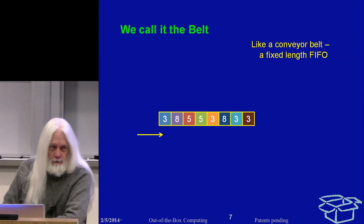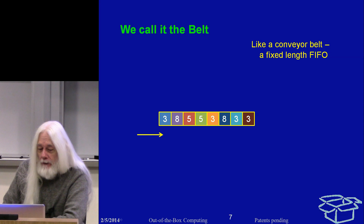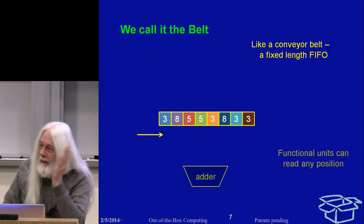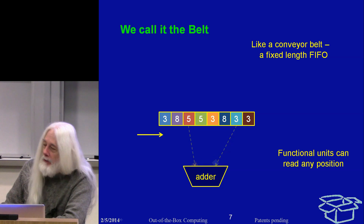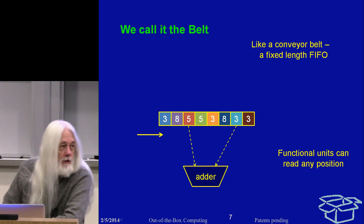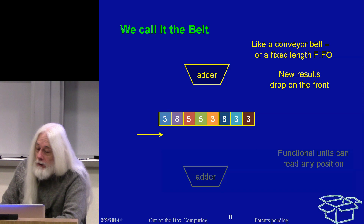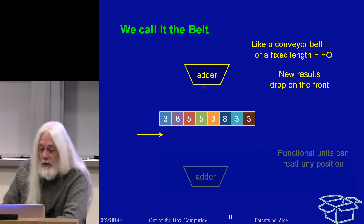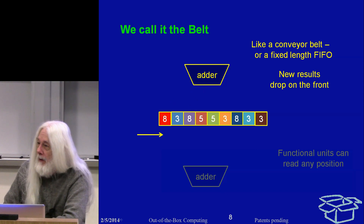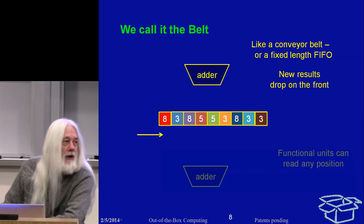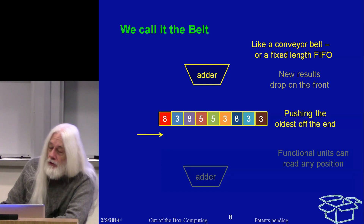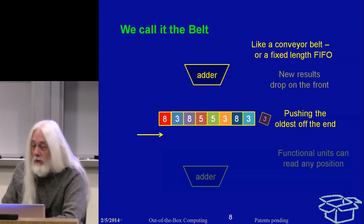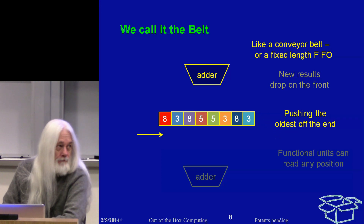It looks like a conveyor belt — it is a fixed-length FIFO. A functional unit can read any position in that FIFO, pulling values off it into the functional unit. New results always drop on the front of the belt unconditionally. You do not specify a destination for your computation. It's a fixed length, so when you drop a new one on the front, that pushes the oldest off the back, and it is gone permanently.